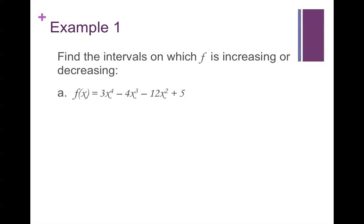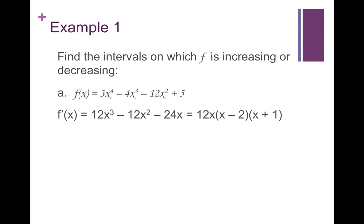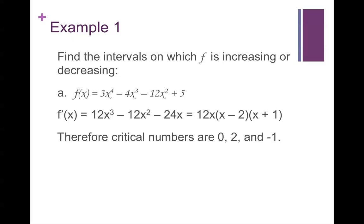So find the intervals on which f is increasing or decreasing, for f of x equals 3x to the fourth minus 4x cubed minus 12x squared plus 5. First we need to find the derivative. Once we find the derivative, we can factor it as 12x times (x minus 2) times (x plus 1). Then we need to find the critical numbers by solving each factor: 12x equals zero, x minus 2 equals zero giving x equals 2, and x plus 1 equals zero giving x equals negative 1.